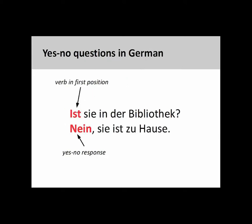German forms yes-no questions in the same manner as English, that is, with the conjugated verb in the first position. In the sentence you see on the screen, 'Ist sie in der Bibliothek?' — Is she in the library? — there is subject-verb agreement between the ist, the third-person singular form of sein, and the subject sie, the third-person singular feminine personal pronoun. The question is answered with a negative nein, and additional information is volunteered: 'Sie ist zu Hause' — She is at home.